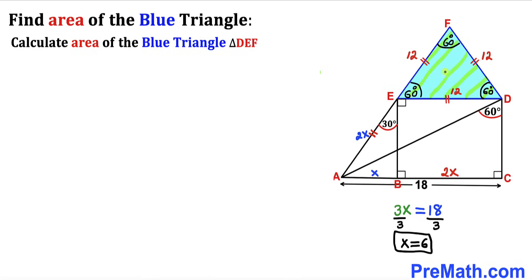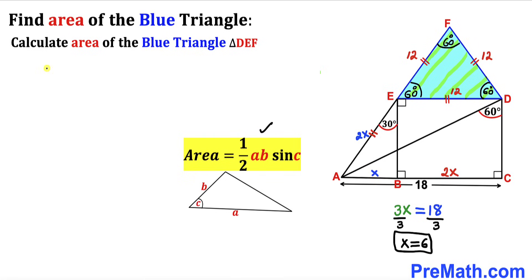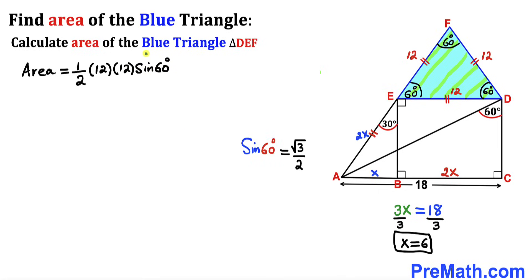Here's our final step. Let's calculate the area of blue triangle DEF. Recall the area of a triangle formula: Area equals one-half times side A times side B times sine of angle C, where A and B are side lengths and angle C is between them. In our case, sides ED and EF are both 12, and the angle between them is 60 degrees. Filling in the formula: area equals one-half times 12 times 12 times sine of 60 degrees. Since sine of 60 degrees equals square root of 3 divided by 2, we replace accordingly.